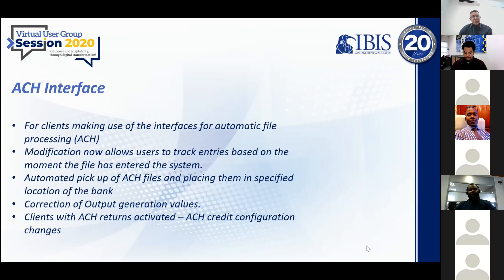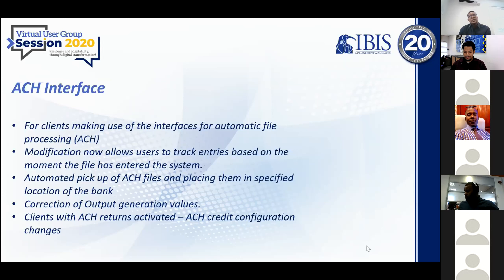One of the things we've done is to be able to track the movement of the file. When a file is placed in a specific location on the system, the Alchemy PPS is going to consume that file. If it processes successfully it goes to a process folder; if it has an error, it goes to an error folder. This makes it much easier for users to see at any point in time where that ACH file is and what has happened to it, and to make corrections or alterations as needed.